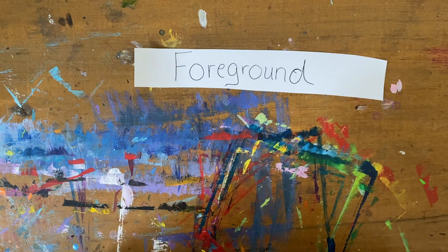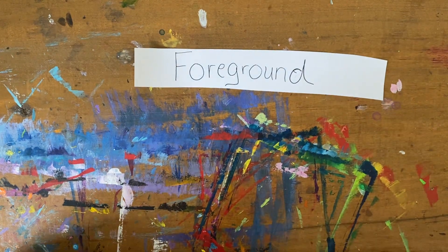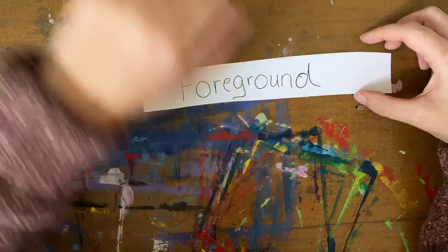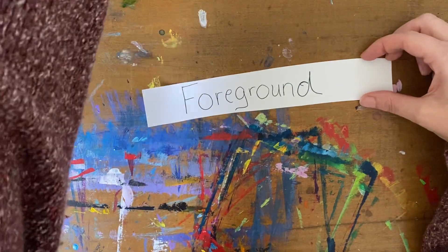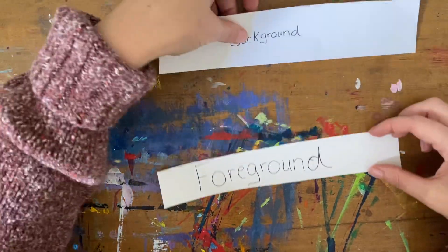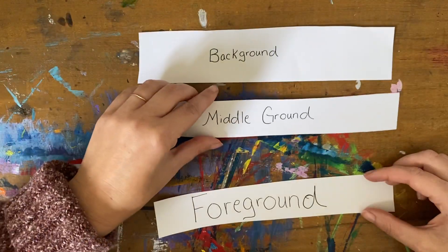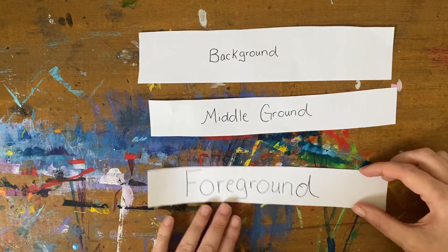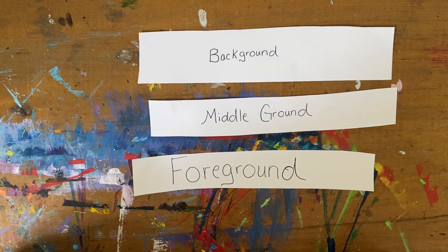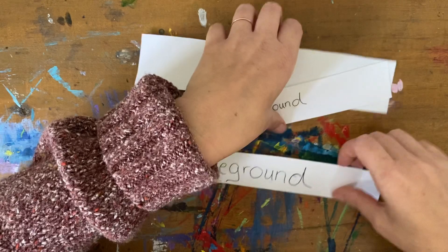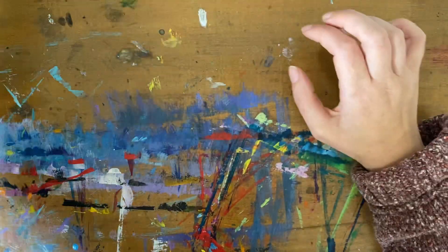The foreground is where things are going to be the biggest and the most detailed. Make sure when you're making your winter landscape that you have something in the background that's far, far away and tiny, something in the middle ground that's medium size, and something in the foreground that's very big and detailed. Let's get started. I'm going to be sketching with a black pen, but you can use a pencil — I always think it's good to sketch with pencil.